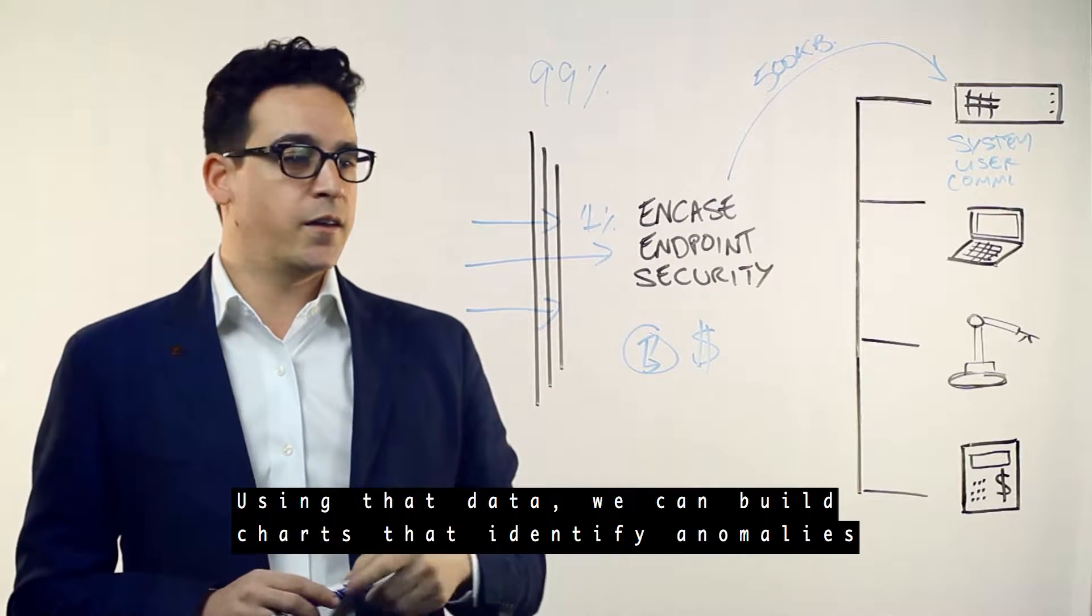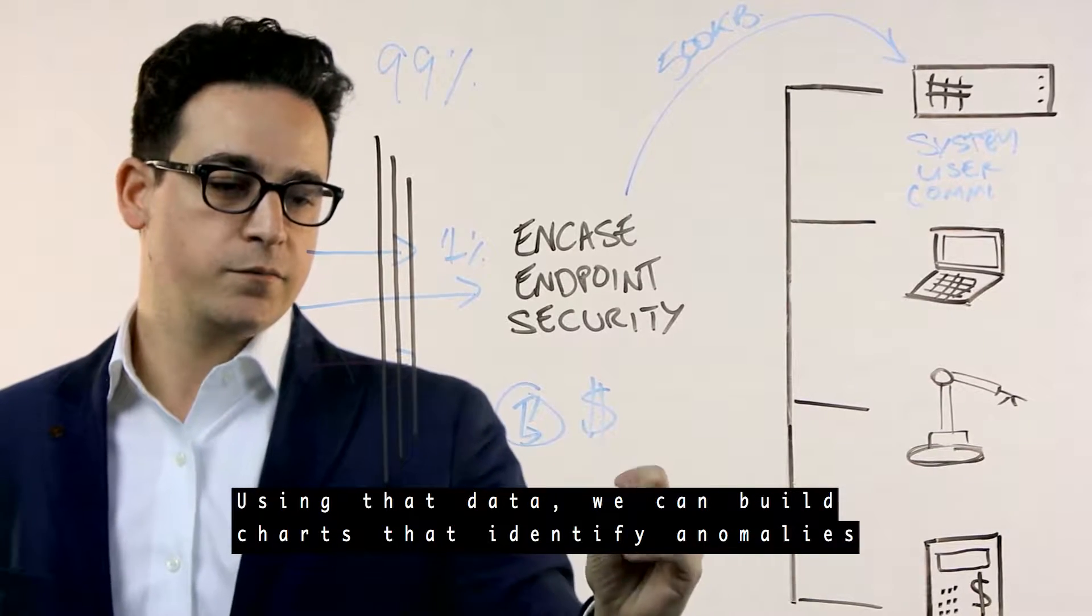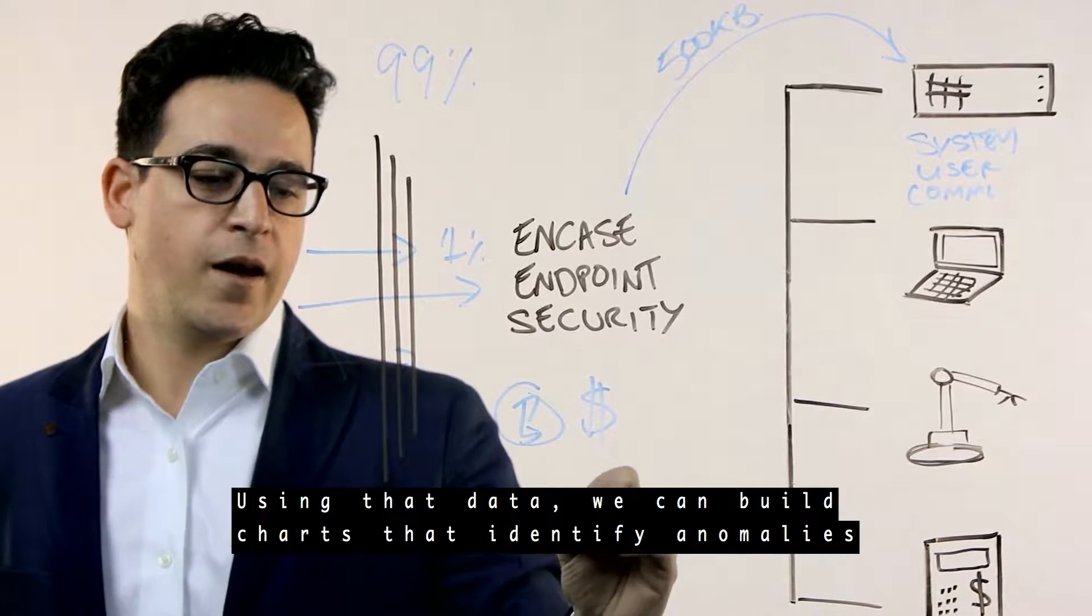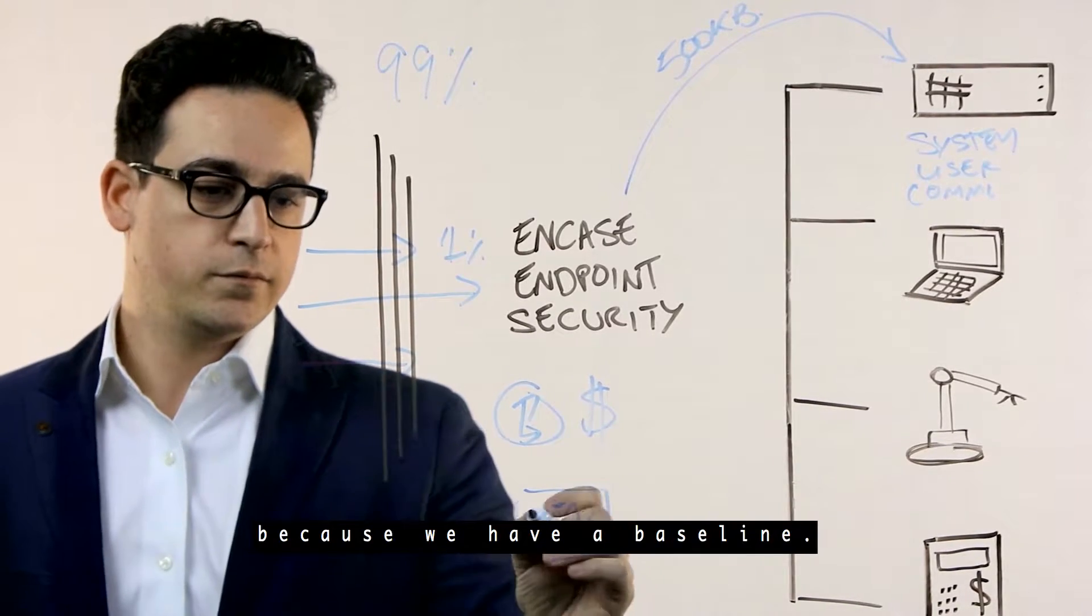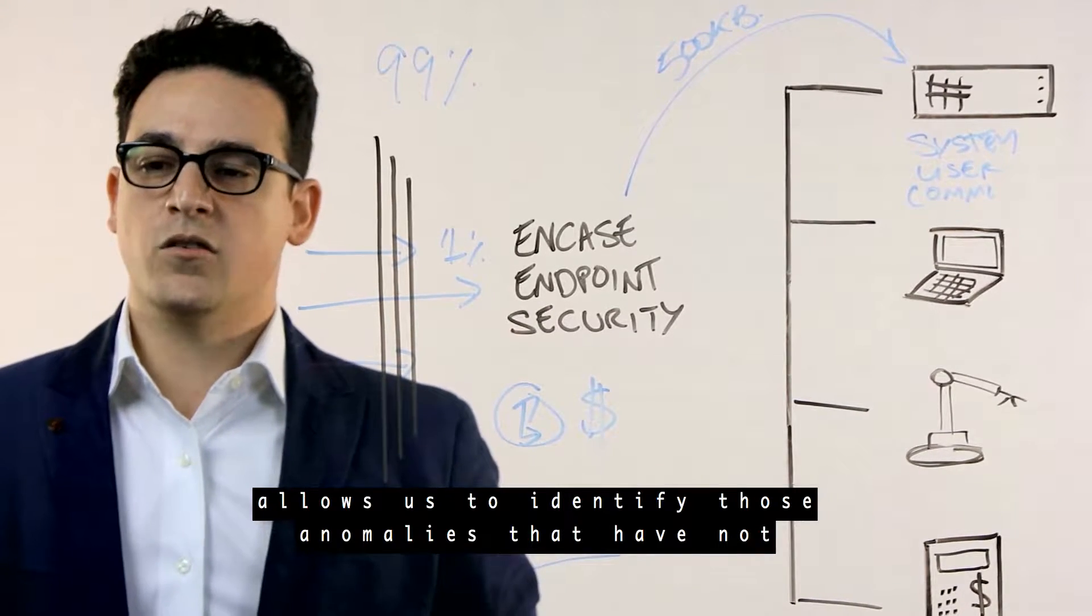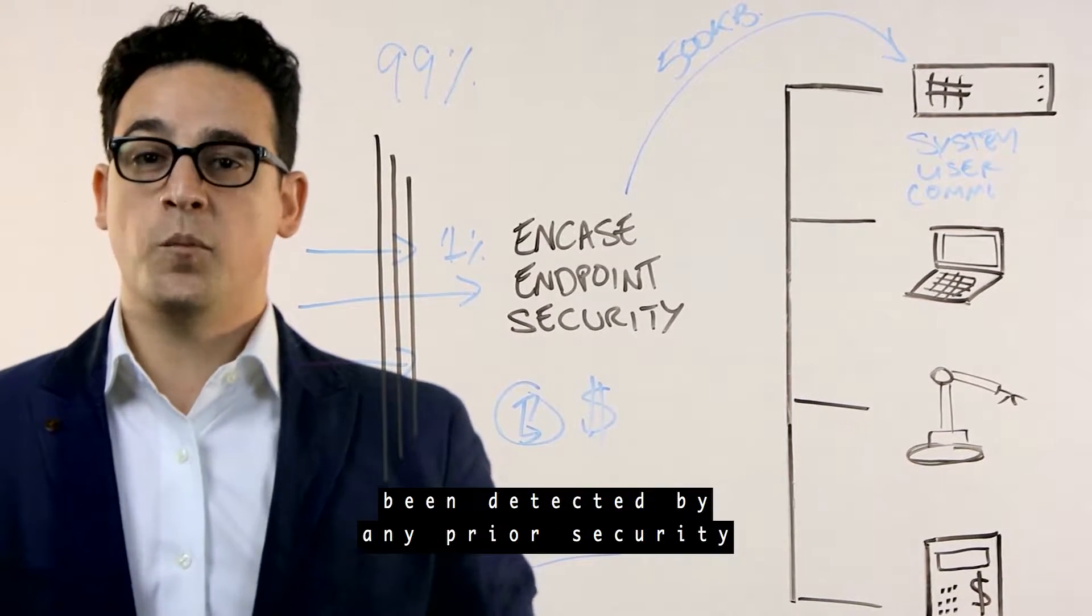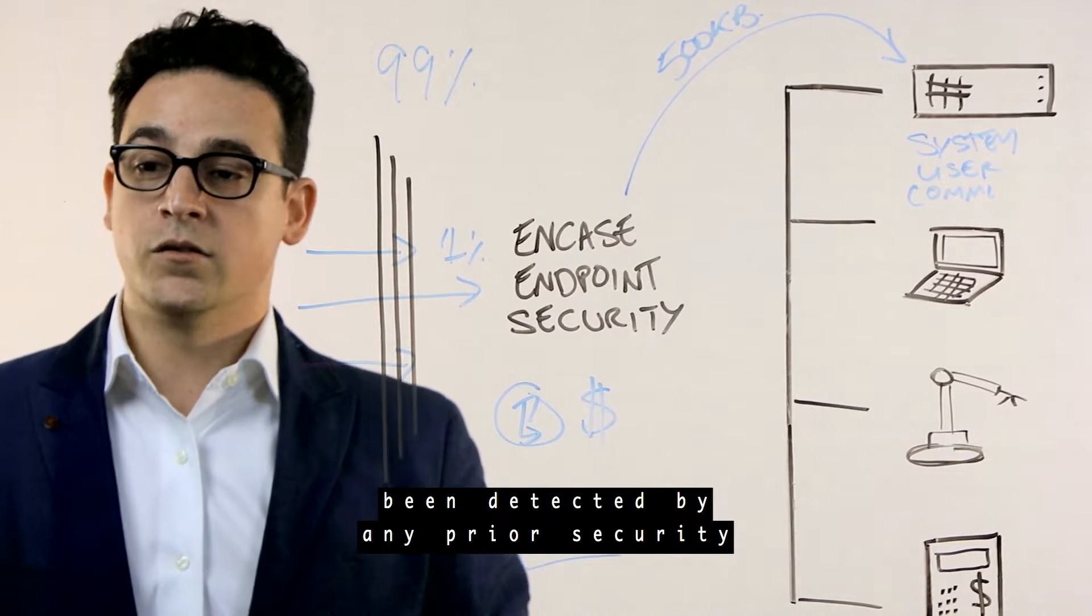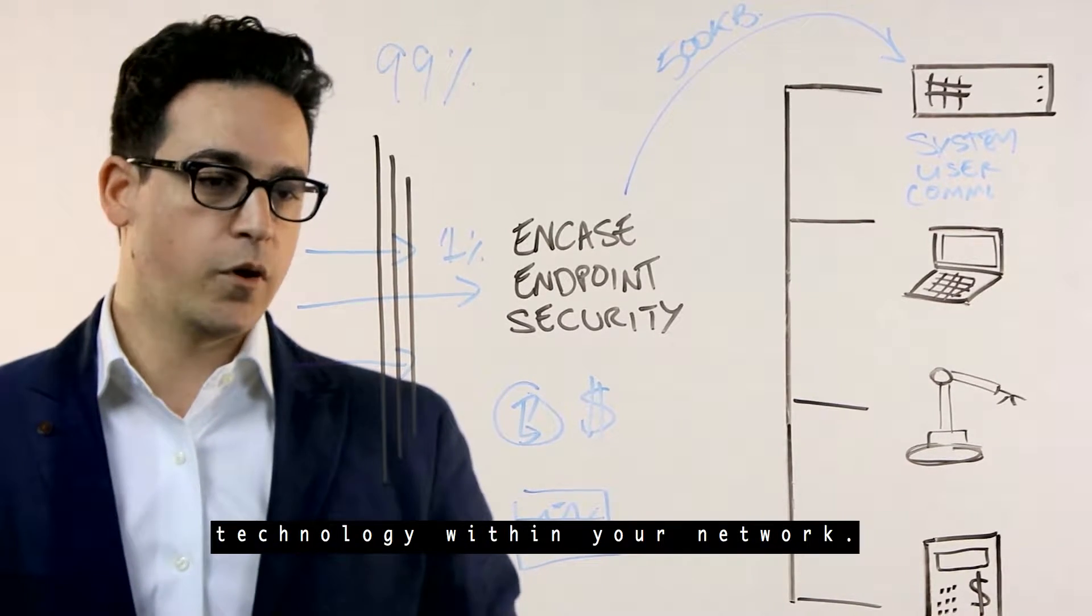Using that data, we can build charts that identify anomalies because we have a baseline. That baseline shows us the norm and then allows us to identify those anomalies that have not been detected by any prior security technology within your network.